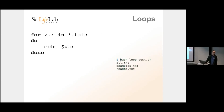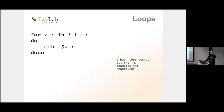You can also use file patterns like *.txt in the for loop — it works like ls *.txt since it's so common to operate on files. If you just type a file pattern it will return the list of all matching file names. For example, if you're standing in a folder with three text files — all.txt, examples.txt, and readme.txt — the code runs three times, once for each file found.